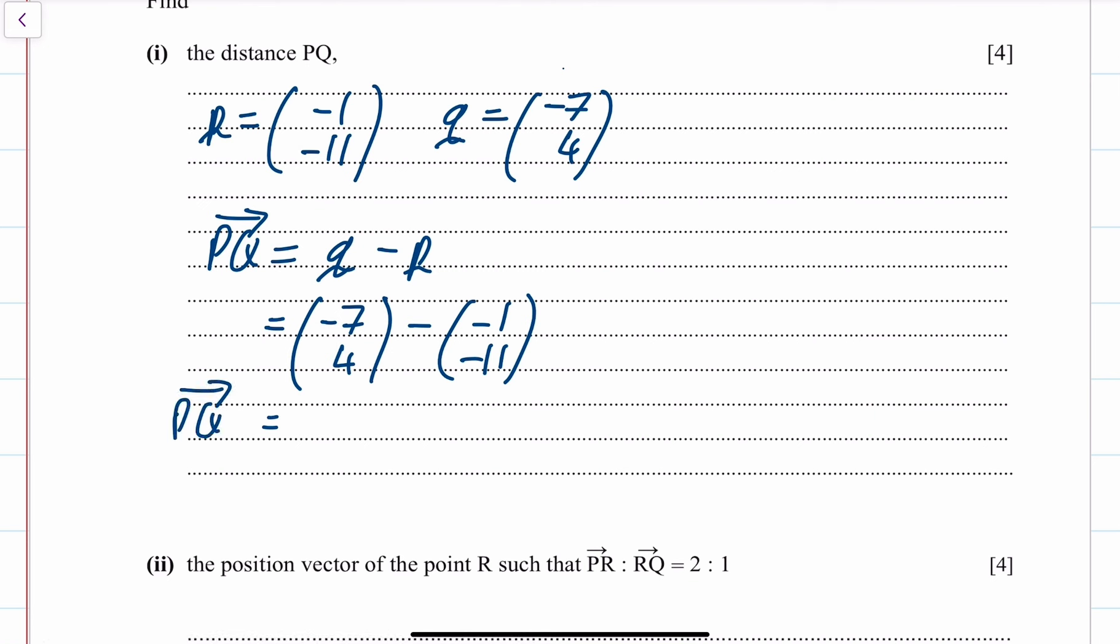That's your displacement vector from P to Q. It's going to be minus 7 plus 1 which is minus 6, and 4 plus 11 which is 15.